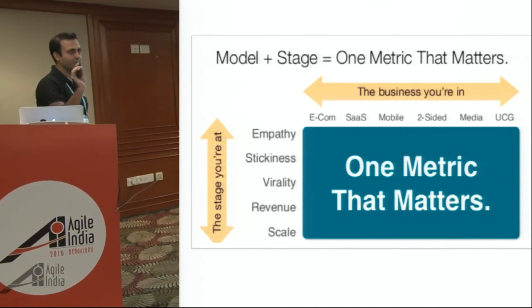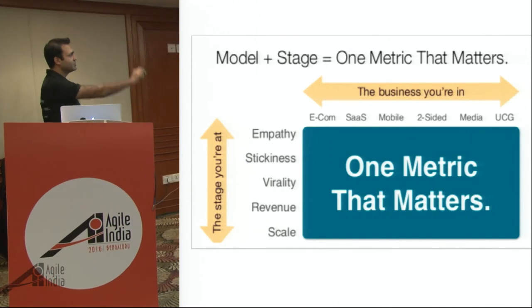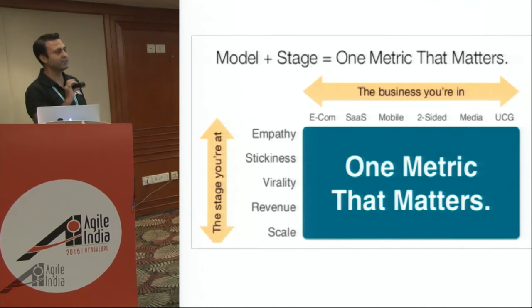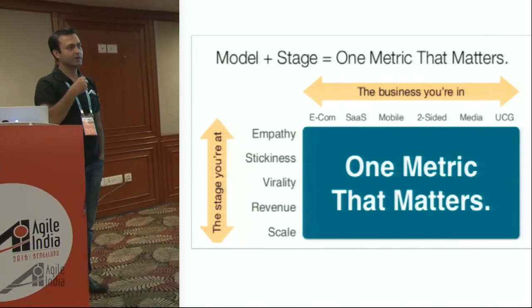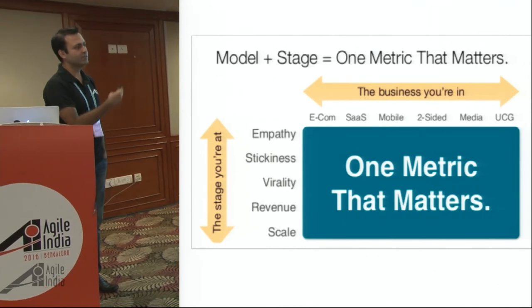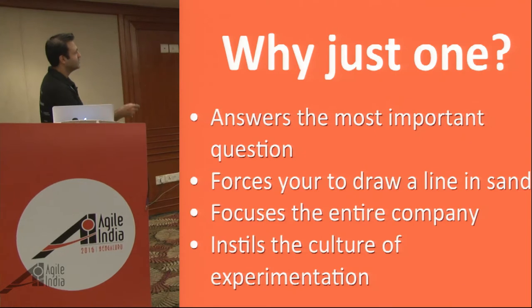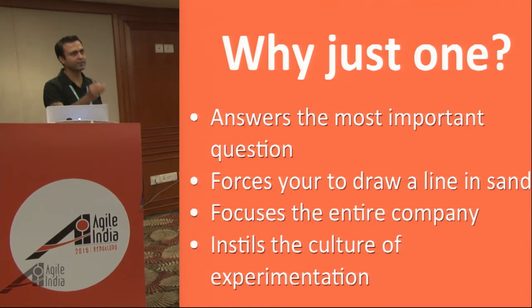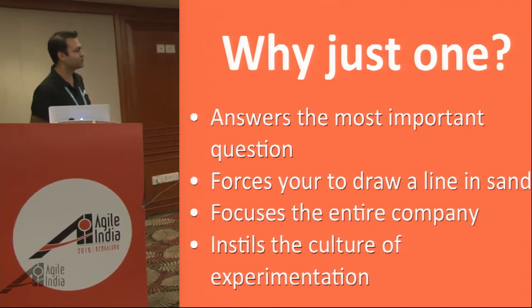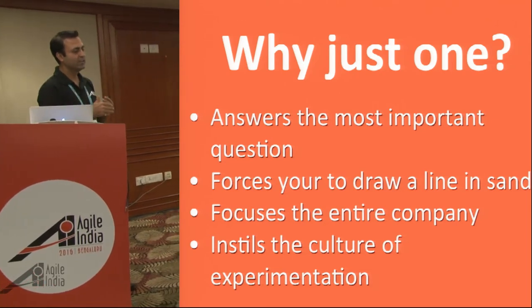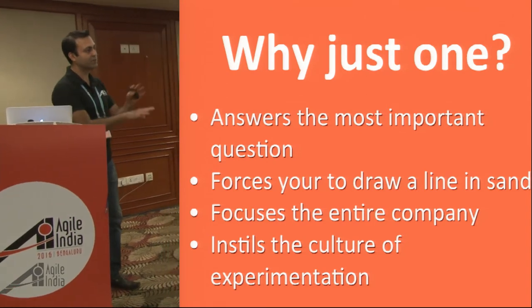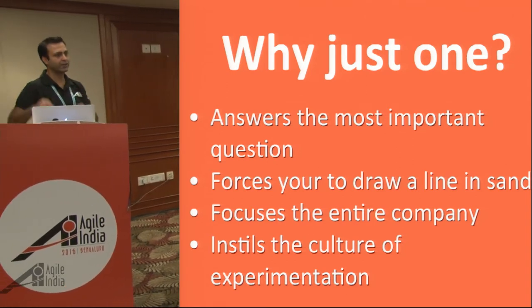Based on the stage you're in and the business you're in, you have to figure out what is the one metric that will really make or break your whole startup. The closer you are to figuring that out, the better your iteration loop. Why one? It lets you focus razor-sharp on that goal. It will also help you draw a line in the sand: 'this is the metric and we need to reach here.' It focuses the entire team because everyone is now talking the same language — we are trying to improve churn, we are trying to improve this metric.